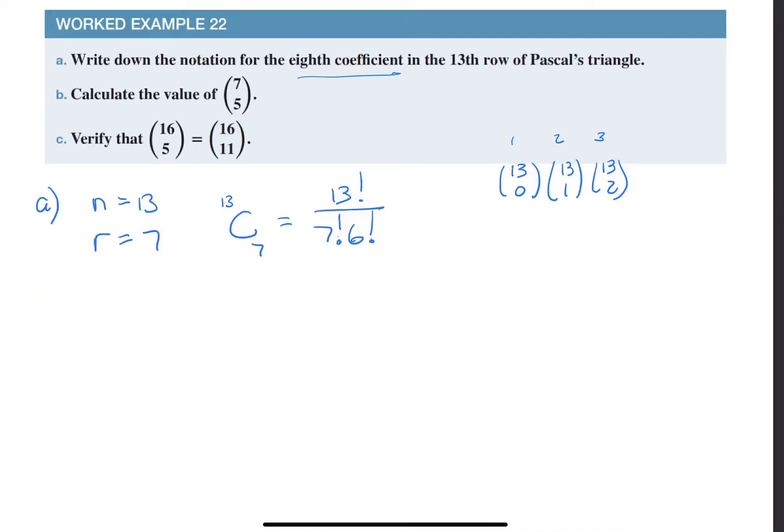Question number B. They say calculate the value of 7 choose 5. So 7 choose 5 will be equals 7 choose 5. That is the same as seven factorial divided by five factorial.